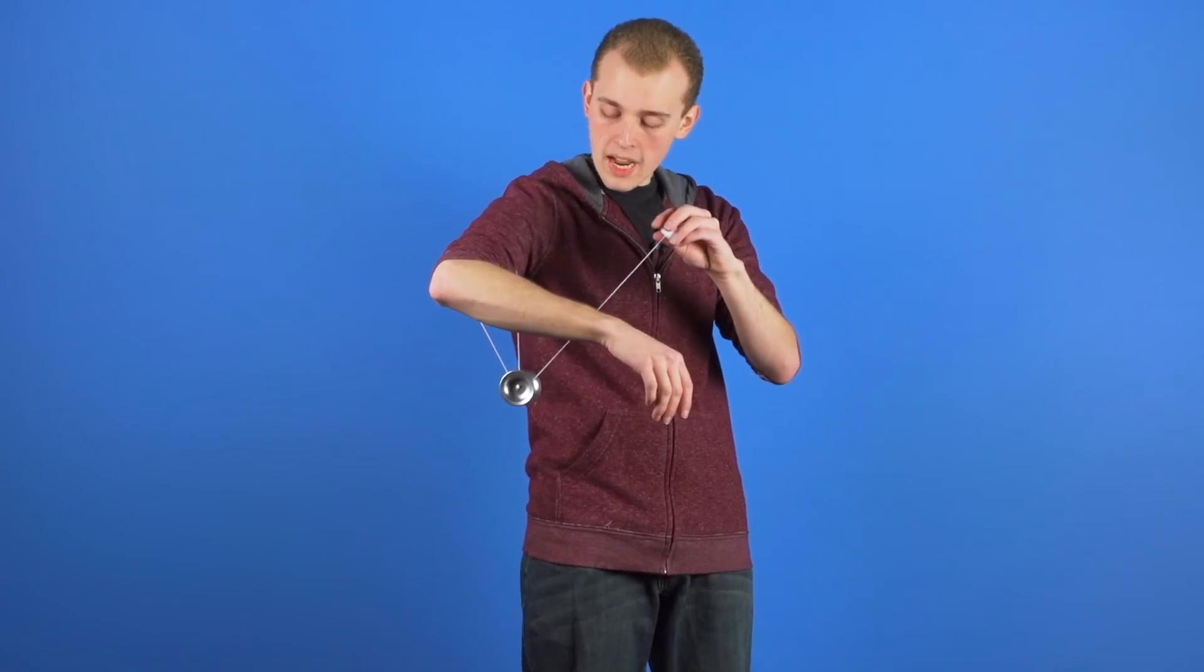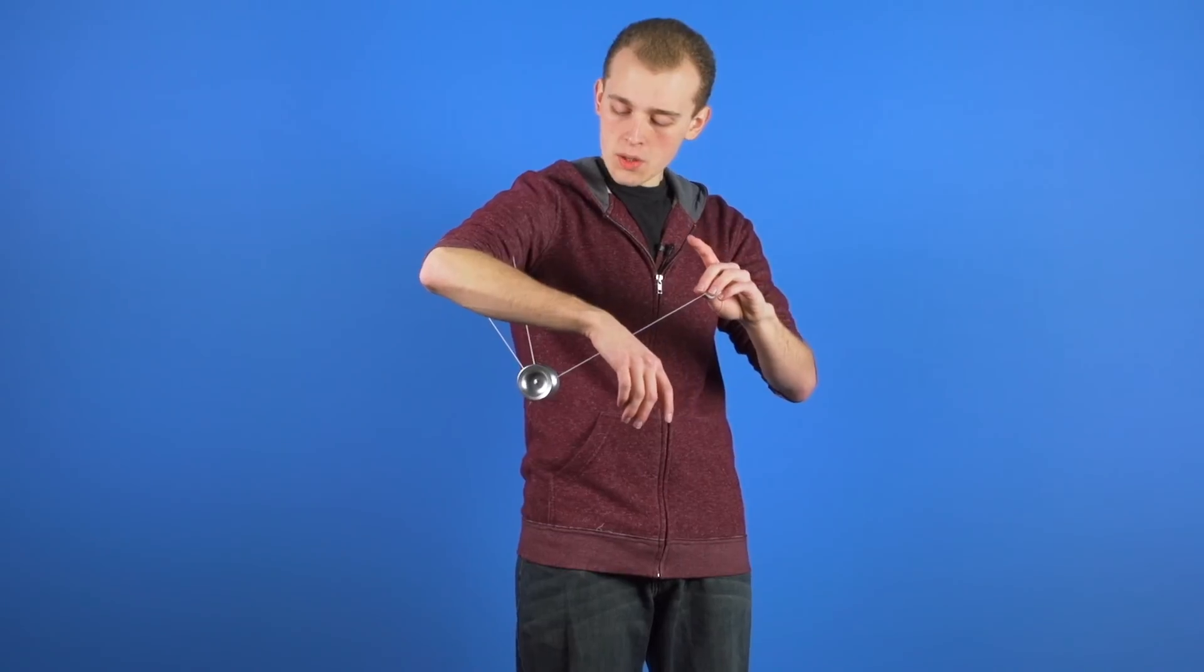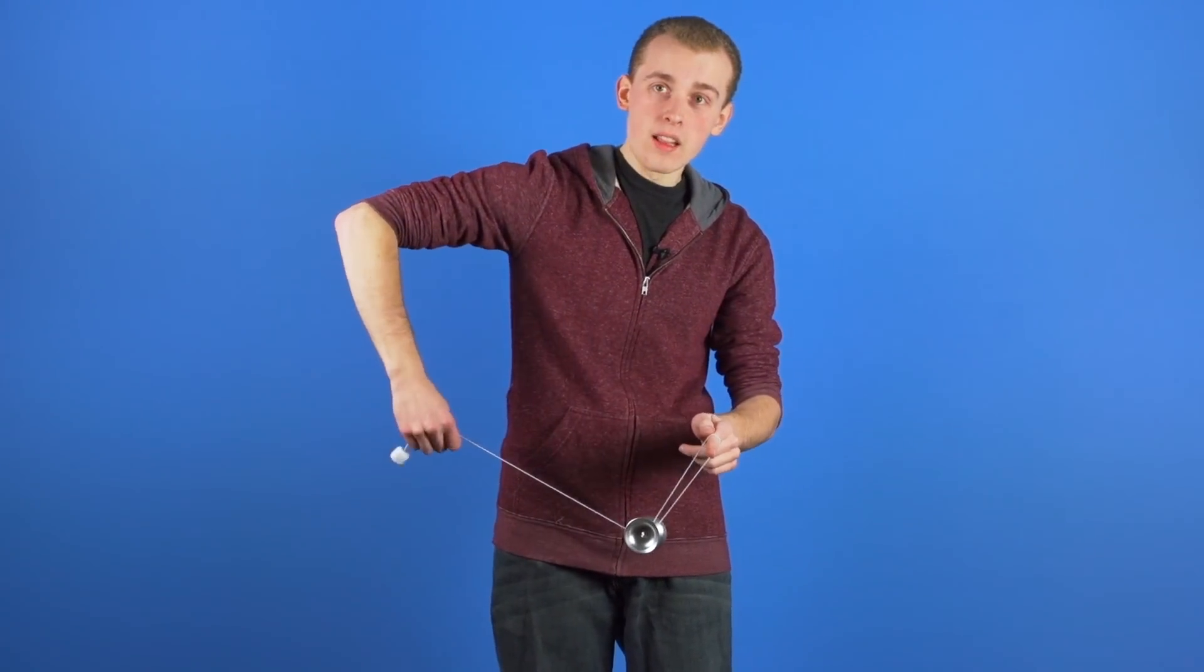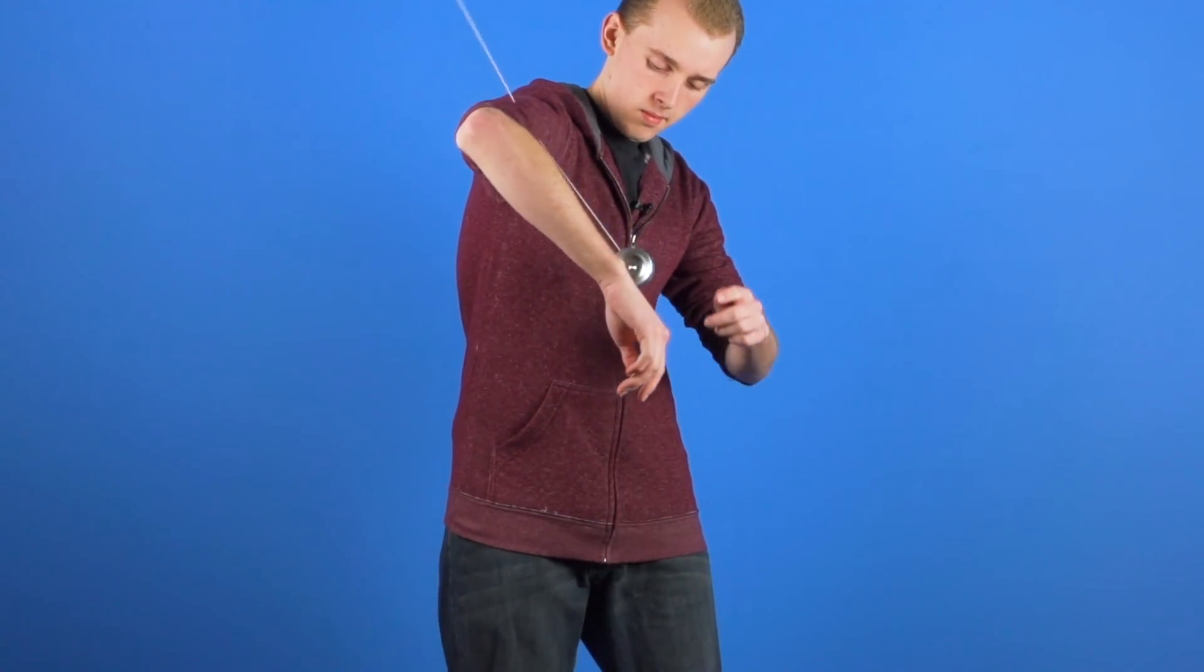So I'm going to throw it down, and then after I let go of the counterweight, I'm going to stick out my opposite hand pointer finger so that the counterweight string can wrap around and land the yoyo into a trapeze.